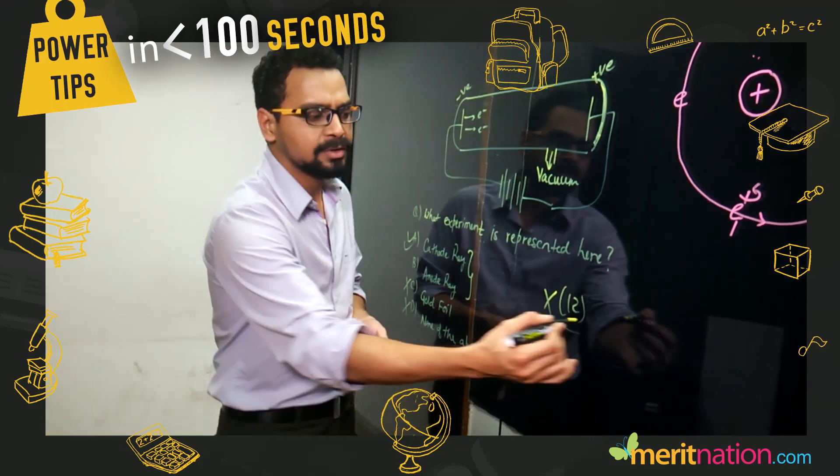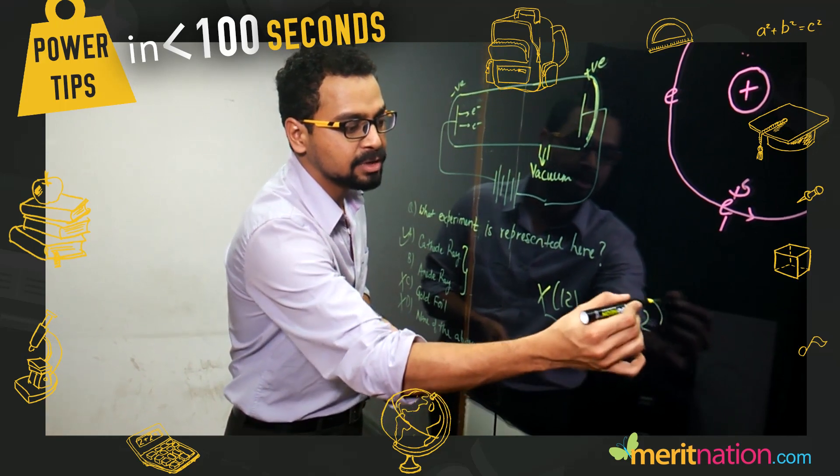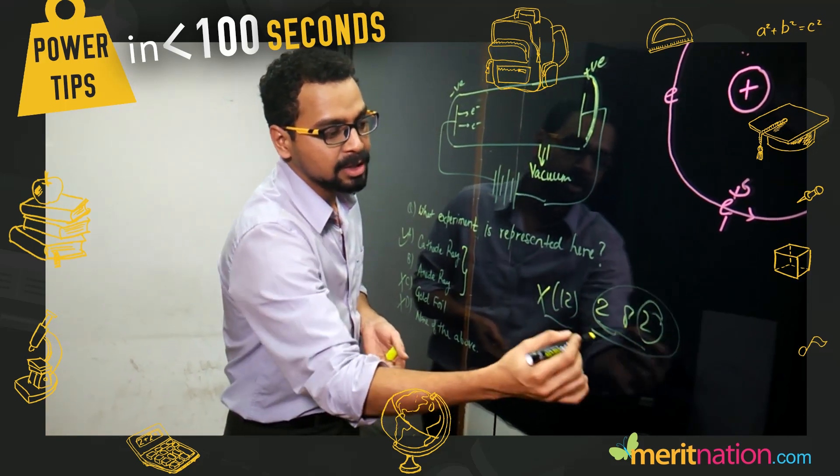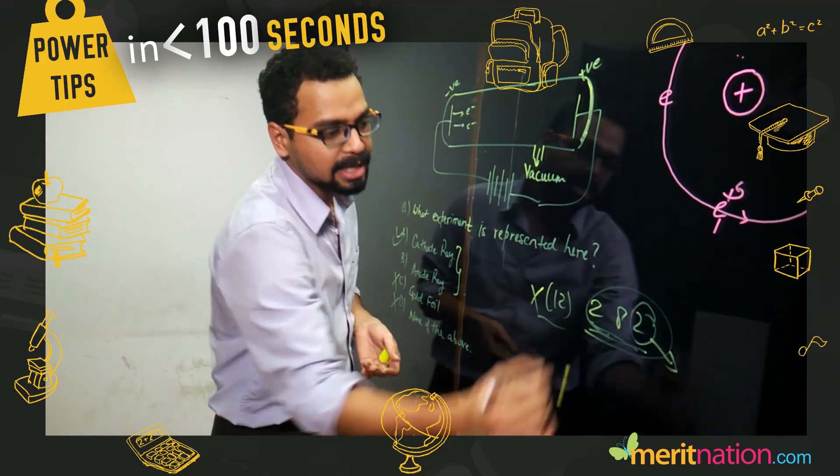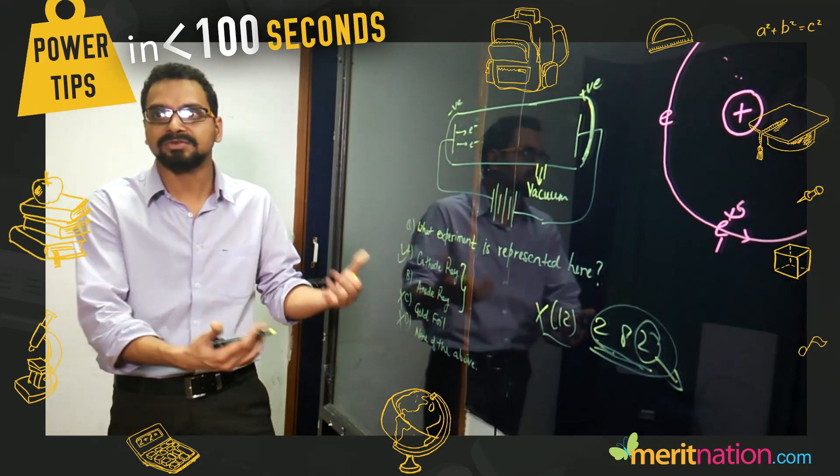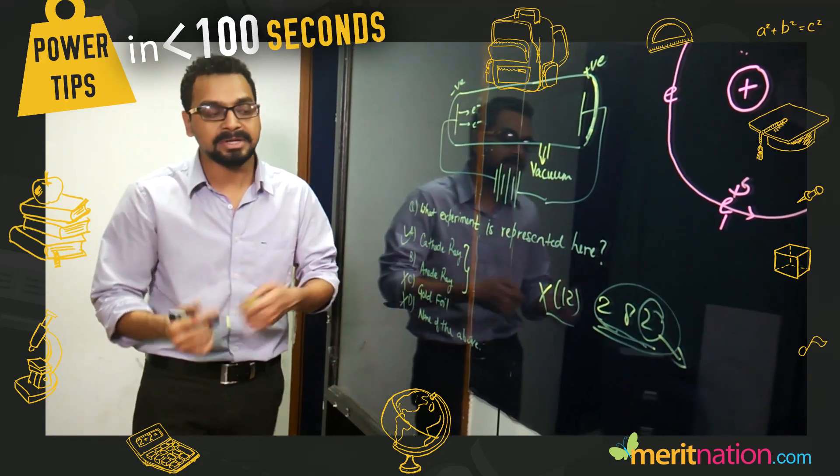You have to go for the electronic configuration, and this information about the shells and the last balanced electron gives you the information regarding the position of the element. Similarly, another very important topic is trends in the periodic table.